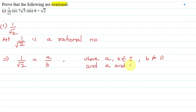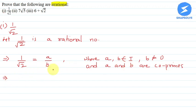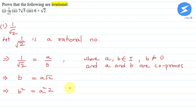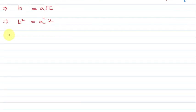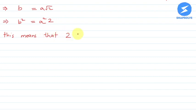These are my conditions: a and b belong to integers, b is not equal to 0, and a and b are co-primes. This implies that b is equal to a root 2. Now I will square both sides, so b squared is equal to a squared into 2. This means 2 divides b squared.